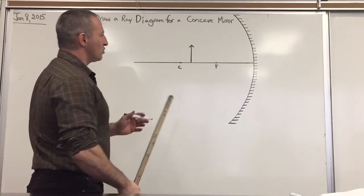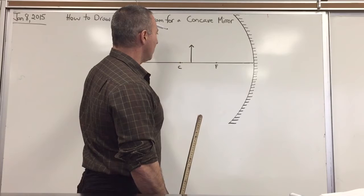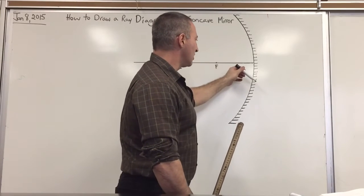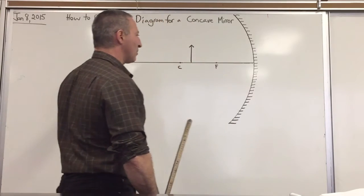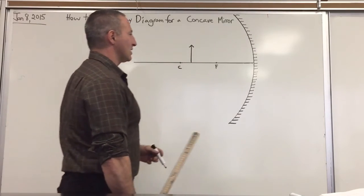So again, we always use two rays. One ray goes straight towards the mirror and then goes through the focus. The second ray goes through the focus first and then reflects backward, reflects back parallel to the principal axis.